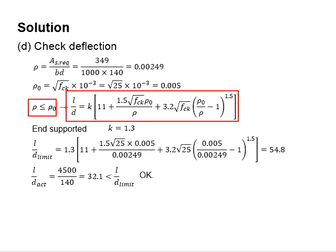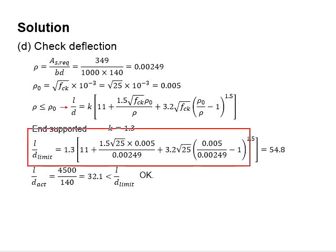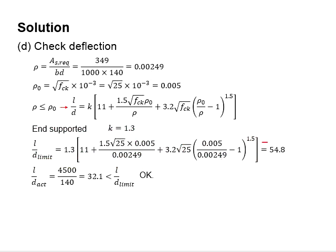Therefore, this equation is being used. Since we are using the slab for end supported slab, the K will be equal to 1.3 based on the table. Substitute the relevant equations. You will get the L/D limit as 54.8.